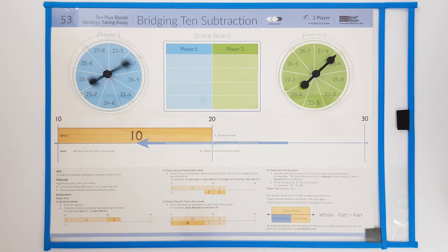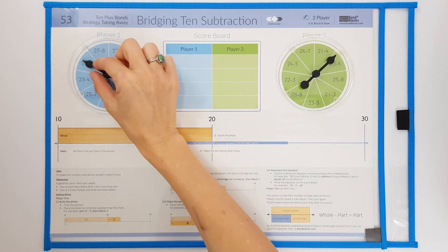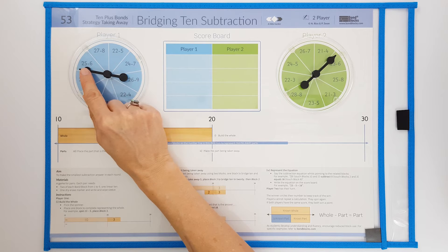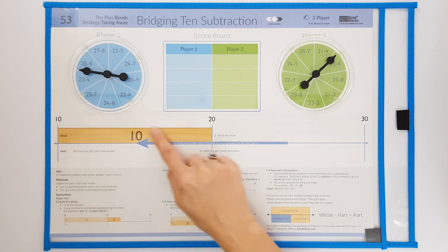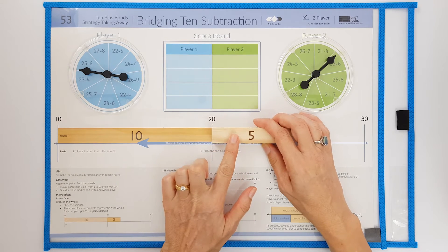Player 1 goes first. They spin. 25 subtract 6. First they build the whole of 25. 20, 5.